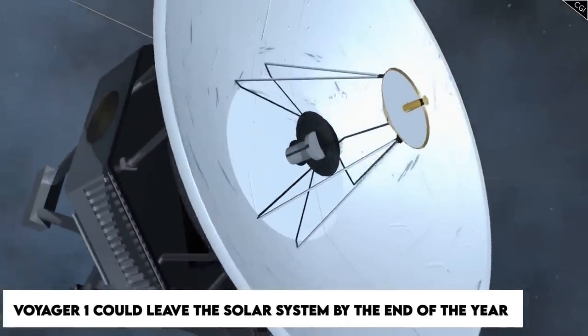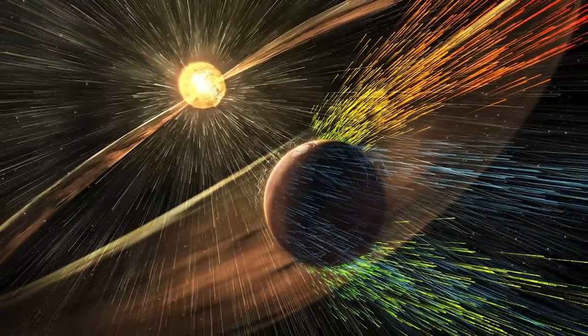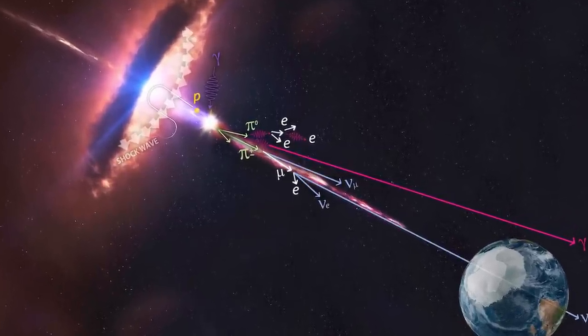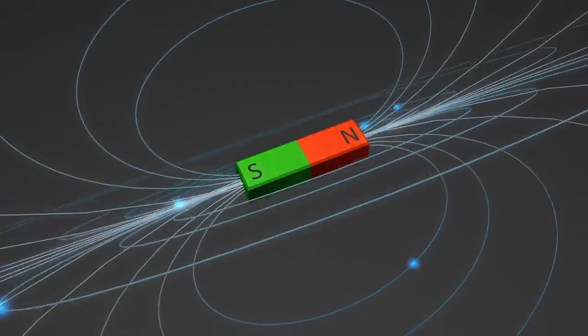NASA scientists predicted in September that Voyager 1 could leave the solar system by the end of the year. Scientists predicted that when the spacecraft approached heliopause, it would pick up fewer particles of solar wind and a greater number of cosmic rays streaming in from beyond our solar system. They also anticipated a reversal in the direction of the magnetic field.